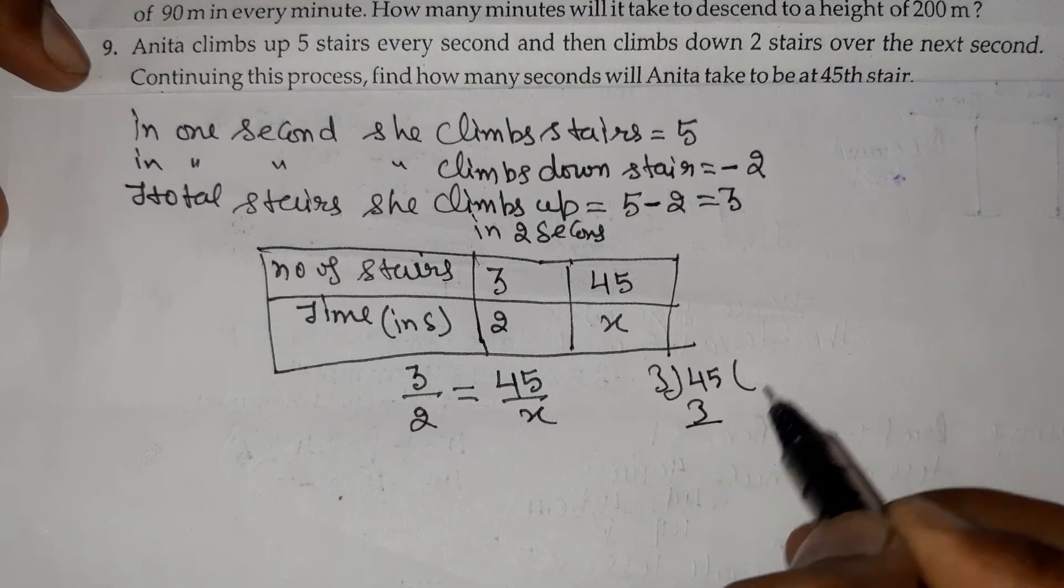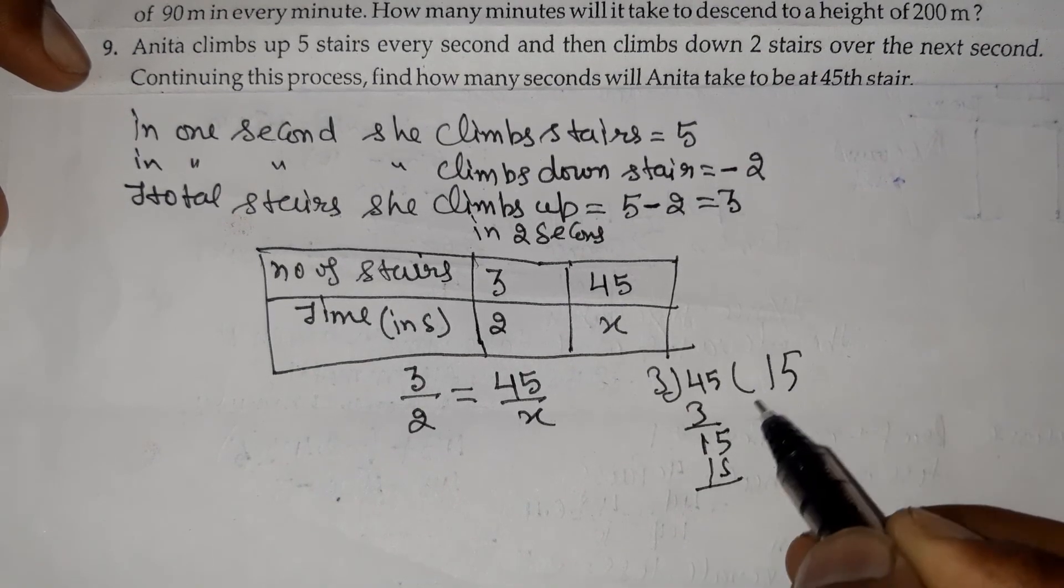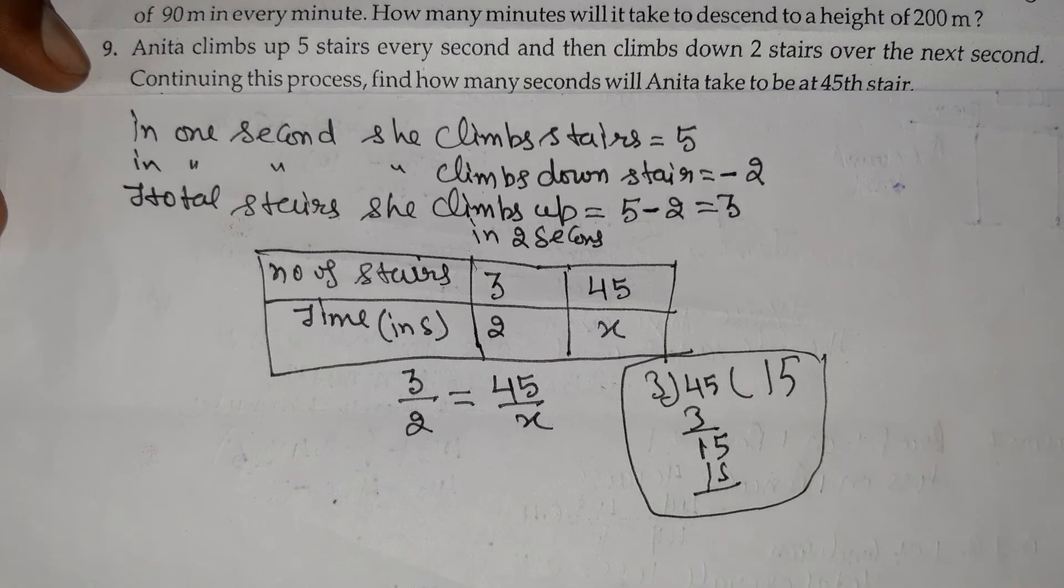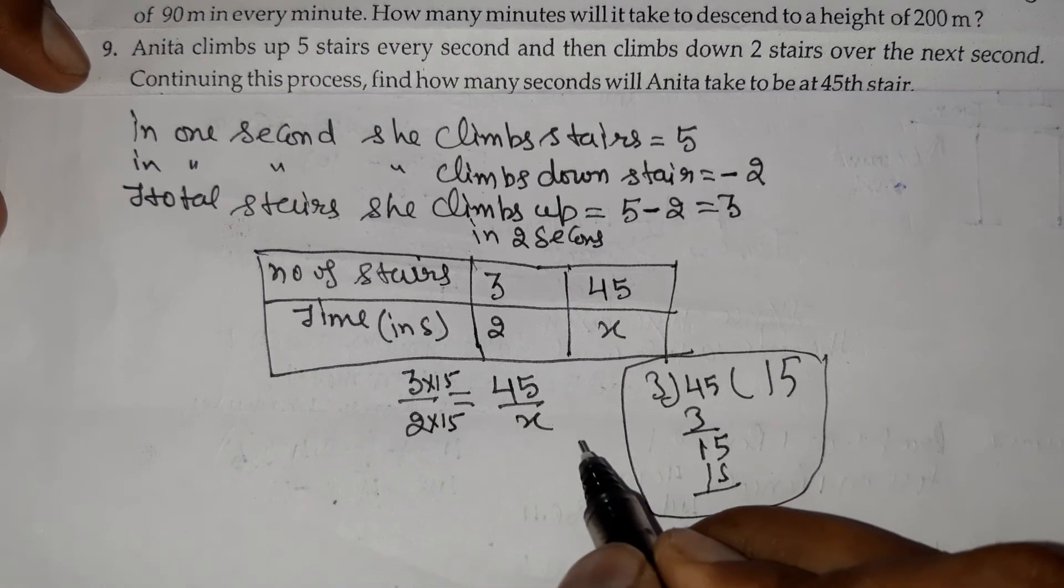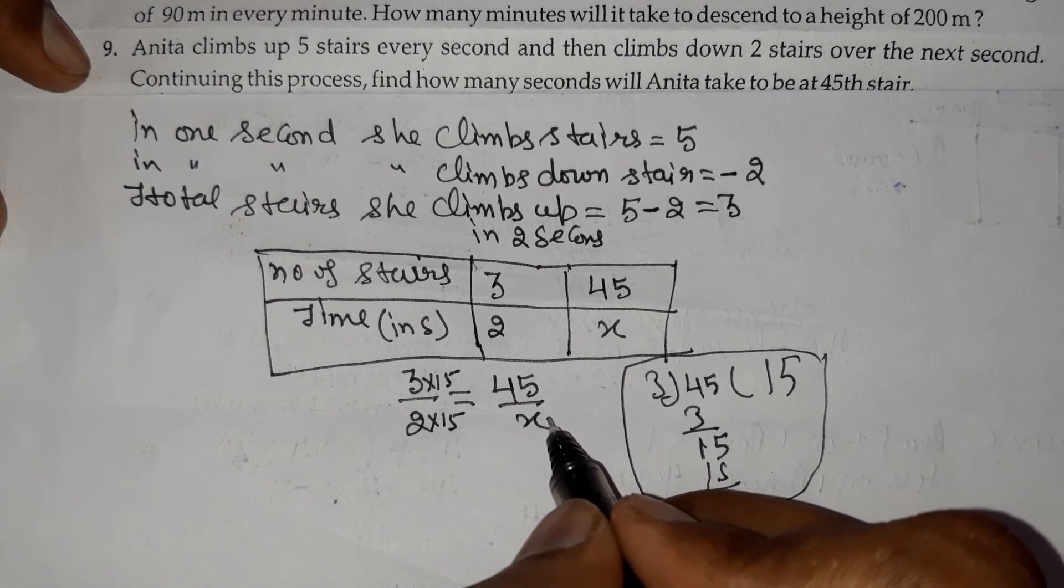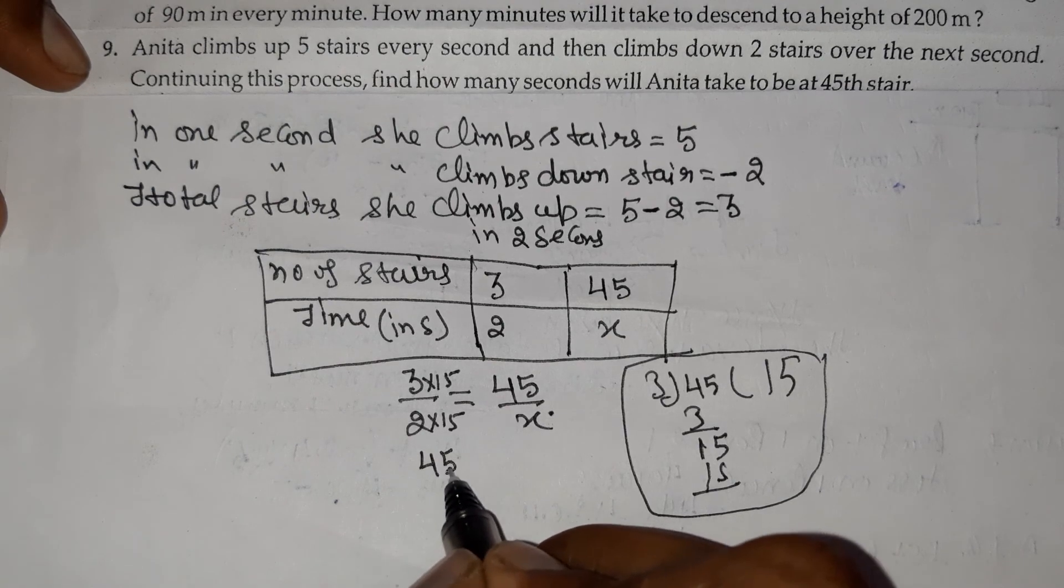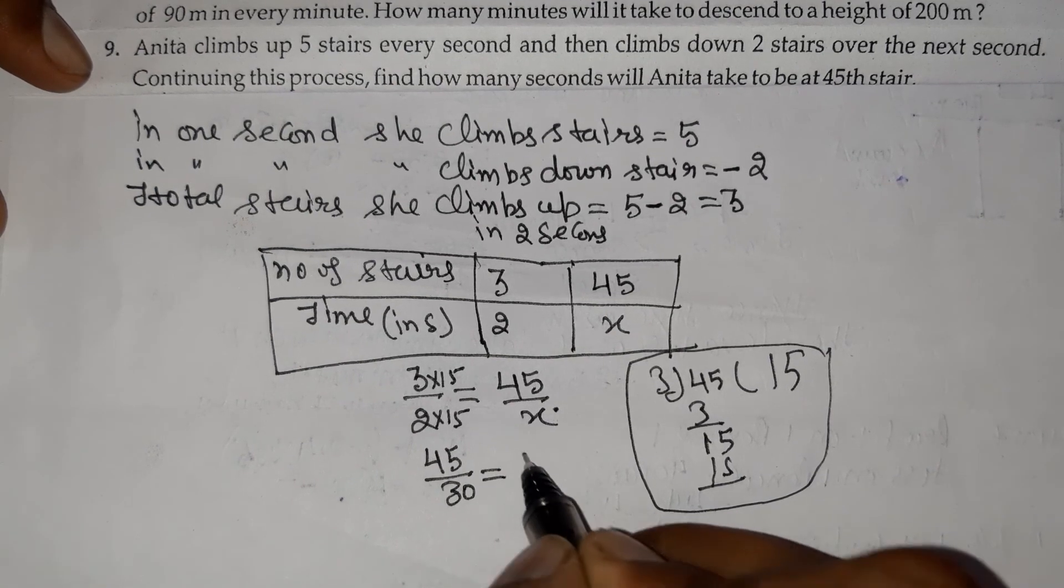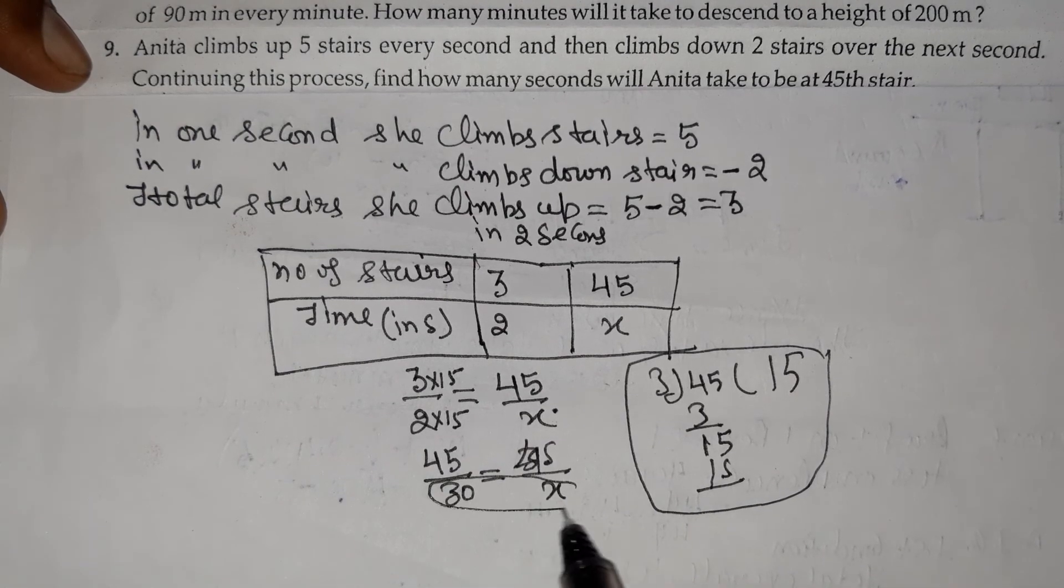Let's verify: 3 goes into 45 fifteen times. Now we multiply the other side by 15. So 2 times 15 equals 30, therefore x equals 30.